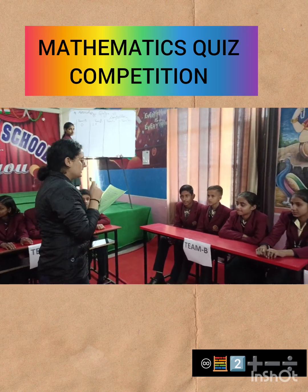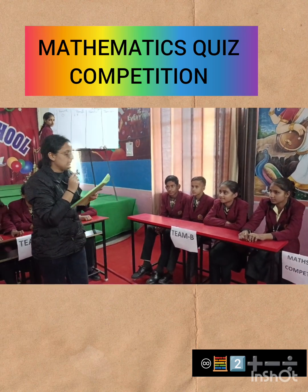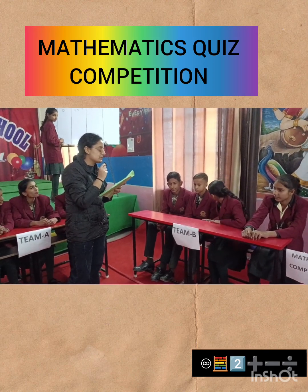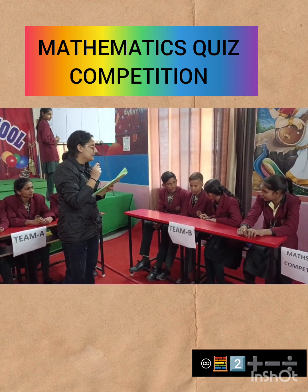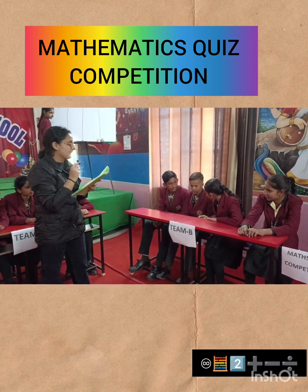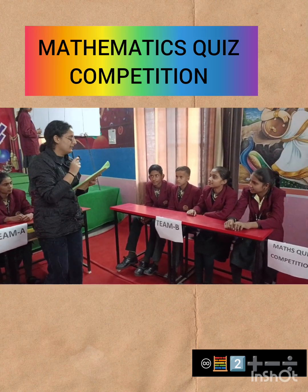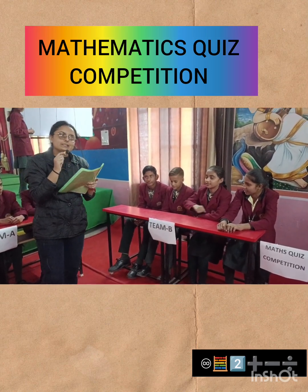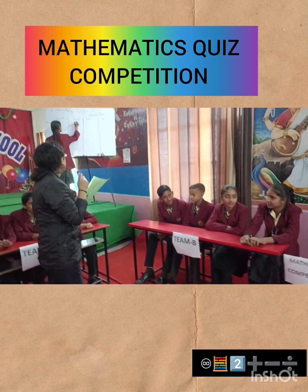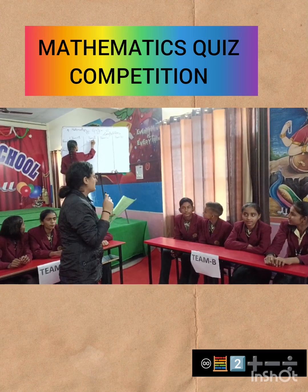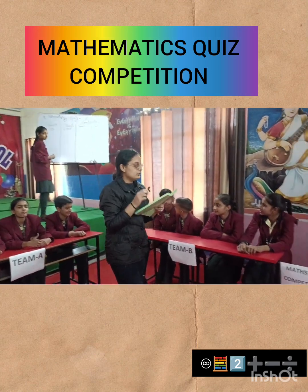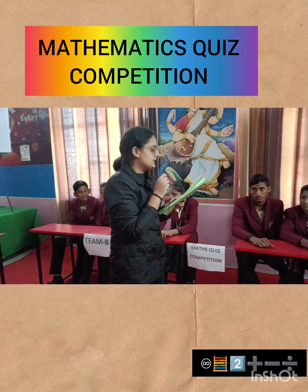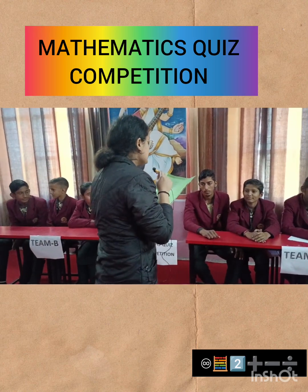Team B, your question is: the multiplicative identity for a rational number is dash. The right answer is one, so Team B will get five marks.